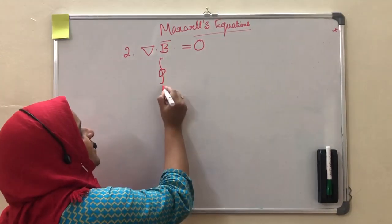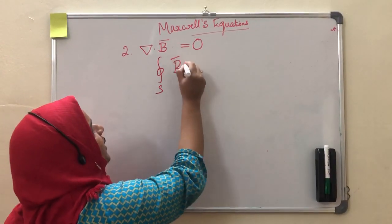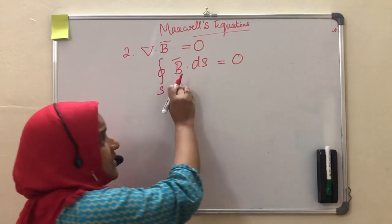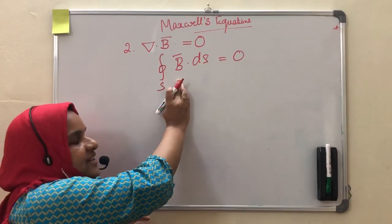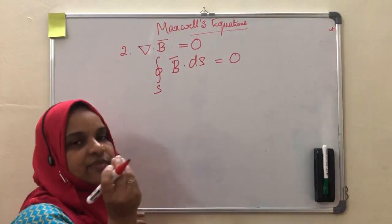The mathematical statement is surface integral of B dot ds is equal to 0, where B is the magnetic flux density and ds is a small area.